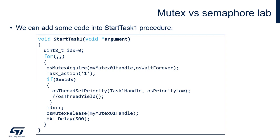We need a local variable idx, defined before the endless loop. Within the loop, we will try to get the mutex using OSMutexAcquire, with osWaitForever as the timeout argument to block the task until it receives the mutex. Then there is task_action sending 1 over the SWO interface. We wait for the fourth occurrence: we decrease the priority of this task to osPriorityLow, which results in a context switch from task 1 to task 2 or task 3, as those tasks have higher priority set to osPriorityNormal. Next is a simple increment of idx. At the end of the loop, we release the mutex, followed by a delay of 500 milliseconds to avoid spamming the single-wire viewer.